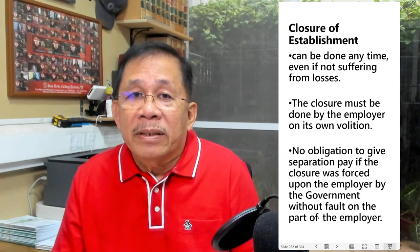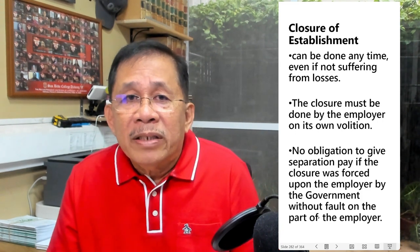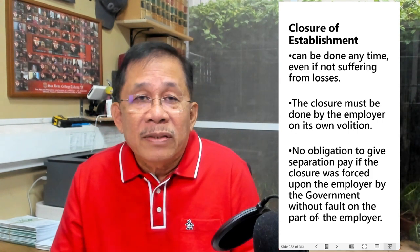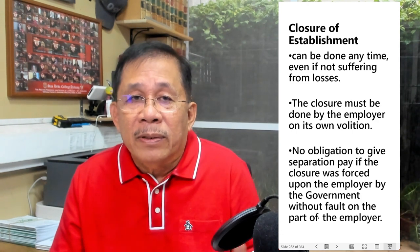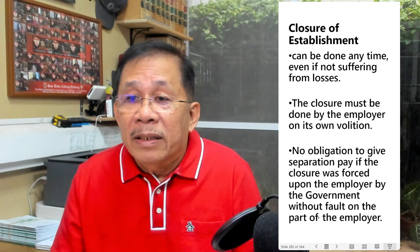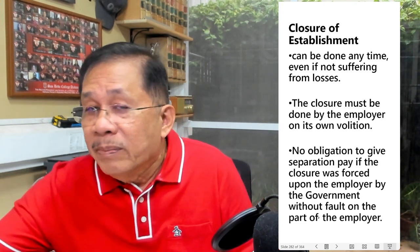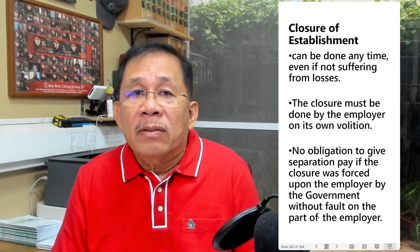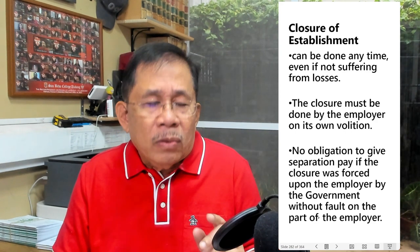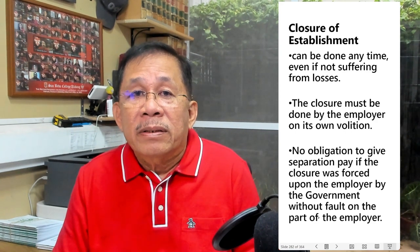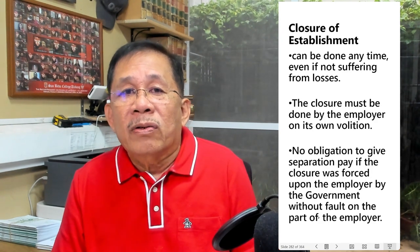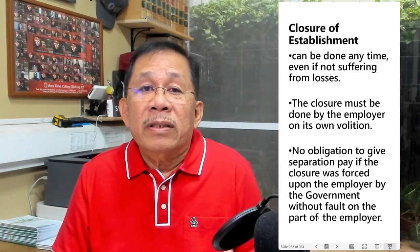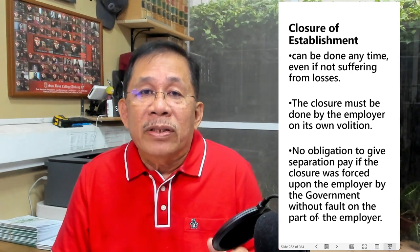The closure must be done by the employer on its own volition, because if the closure was forced upon the employer by the government without fault on the part of the employer, the employer is not under obligation to give separation pay. There is a distinction between retrenchment to prevent losses and closure of business due to losses. Closure of business due to losses presupposes a complete cessation of business operation, or part of it. In retrenchment to prevent losses, the business continues to operate but with a reduced manpower.